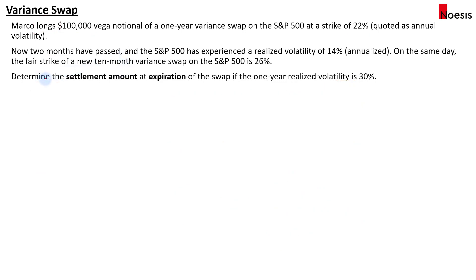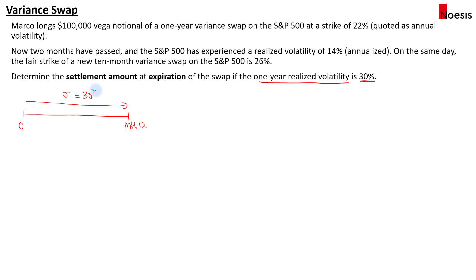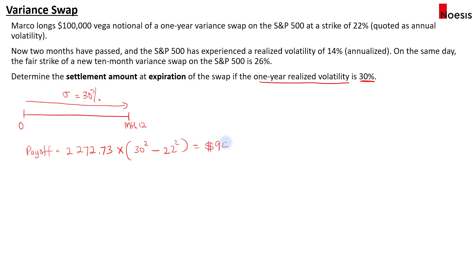Now in the same example, let's say we want to determine the settlement amount at expiration of the swap, if the one-year realized volatility is 30%. So at the end of that one year, at month 12, over the whole period the volatility is 30%. Using the similar formula as before, the payoff at expiration is based on the variance notional of 2,272.73, multiplied by the realized variance of 30², minus the strike squared of 22². This equals 945,455.68.